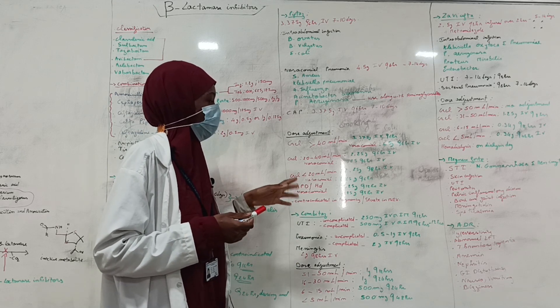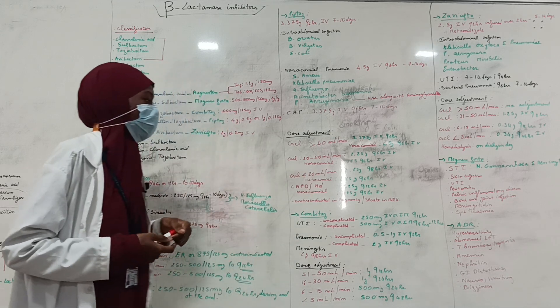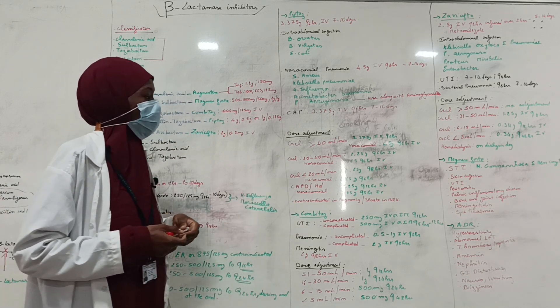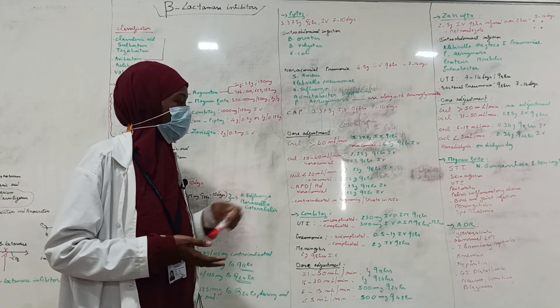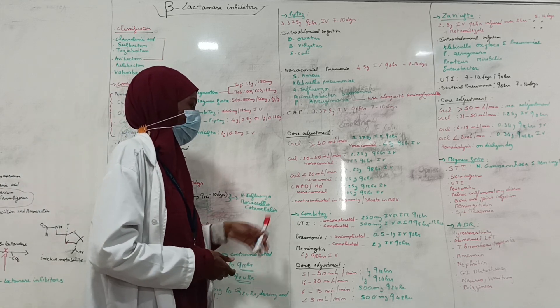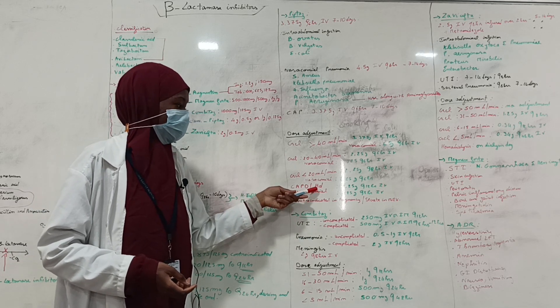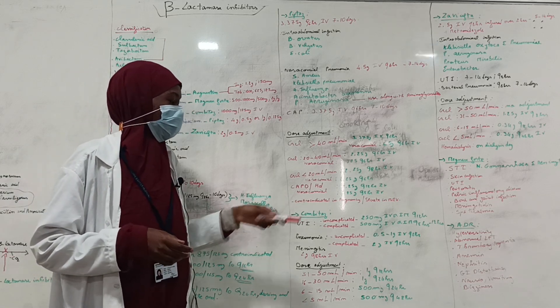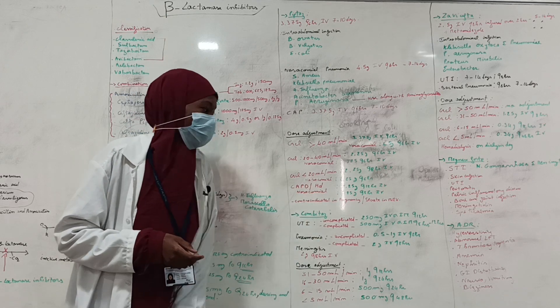For people with nosocomial pneumonia, 3.375 g every 6 hours IV can be given. For creatinine clearance less than 20 ml per minute, 2.25 g every 8 hours. For nosocomial pneumonia, 2.25 g every 6 hours. For patients on continuous ambulatory peritoneal hemodialysis or hemodialysis, 2.25 g every 12 hours IV can be given. If the patient has nosocomial pneumonia, 2.25 g every 8 hours IV can be given.